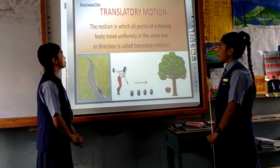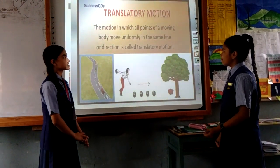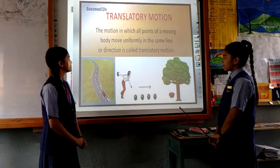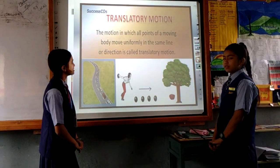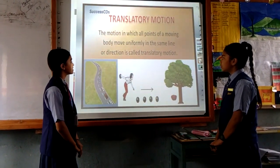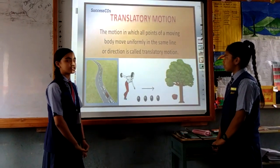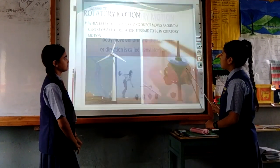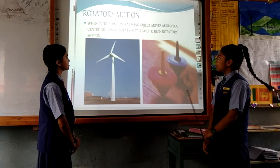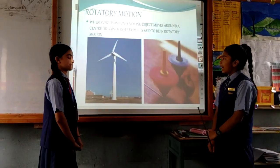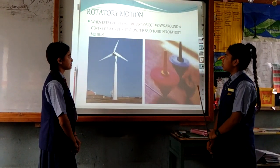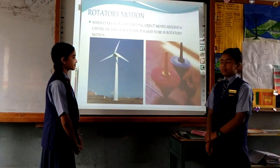Translatory motion: the motion in which all points of a moving body move in the same line or direction. Rotatory motion: when every point on the moving object moves around the center or axis of rotation, it is said to be in rotatory motion.